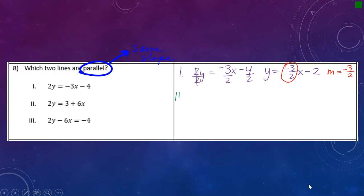Now I need to do the same thing for number 2. I have 2y equals 3 plus 6x. This one looks a little funny because usually the x term is first. It actually doesn't matter as long as you know that when you're looking for your slope, it's the number in front of x. I'm going to do the same thing and divide by 2.